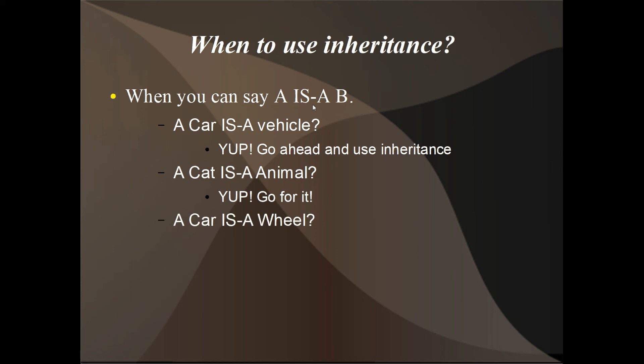Now what about a car is a wheel? No, that doesn't really make any sense. But a car has a wheel. It has a has-a relationship. So what we would do in the case of a has-a relationship, instead of using inheritance, we would just simply give the car class an instance of wheel. We'd basically give it a wheel variable.